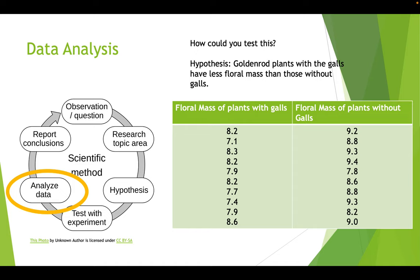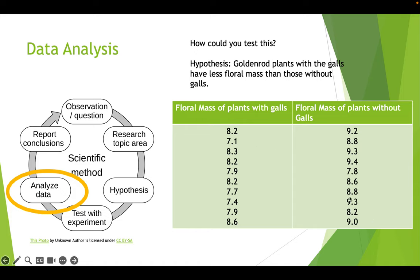Here's some hypothetical data I made up. I have 10 plants in each data set: the mass of the flowers in plants with galls, and the mass of the flowers in plants without galls — in grams. If you have these two data sets, is it enough to just look at the data to make that determination? No. We have to use some kind of statistical tool in order to be able to tell whether these two data sets are significantly different or if they're too close to tell.